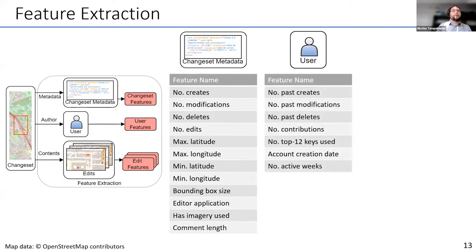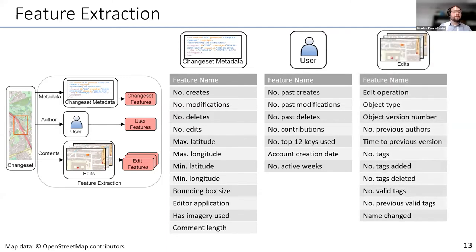The next feature category focuses on users — we try to capture user experience: how many objects did the user create in the past, do they always use the right annotations, when did they create their account, how many active weeks do they have, and how credible is this user? Finally, we have the edit features. Changesets bundle multiple edits, and for each edit we compute an individual feature vector capturing the operation (delete or create), the object type, whether it's an old or new object, and whether the name was changed.